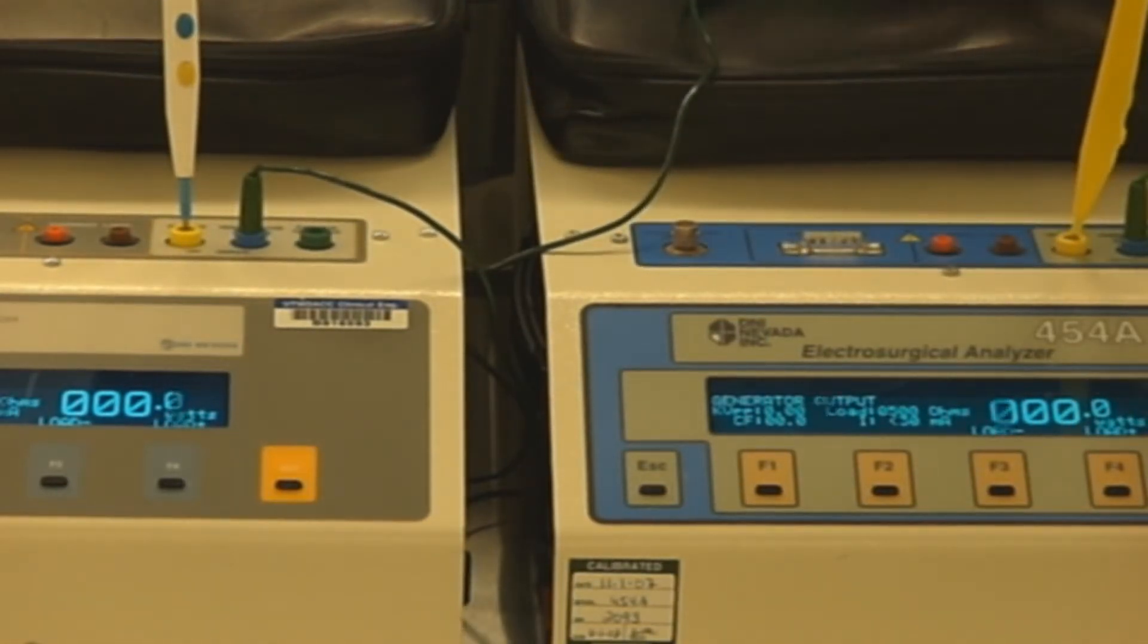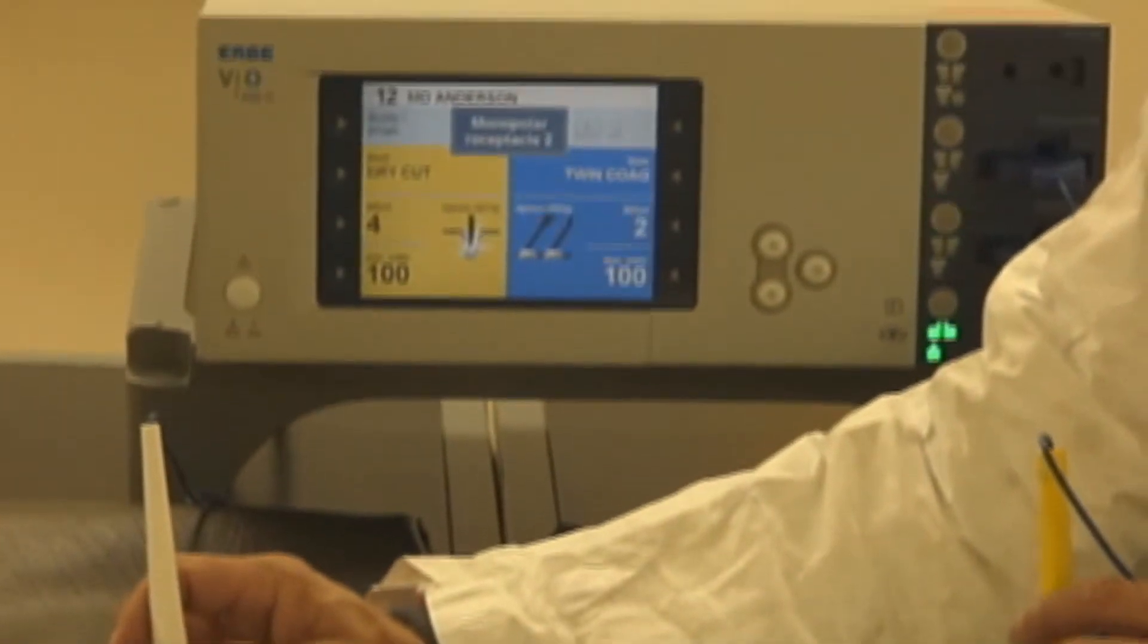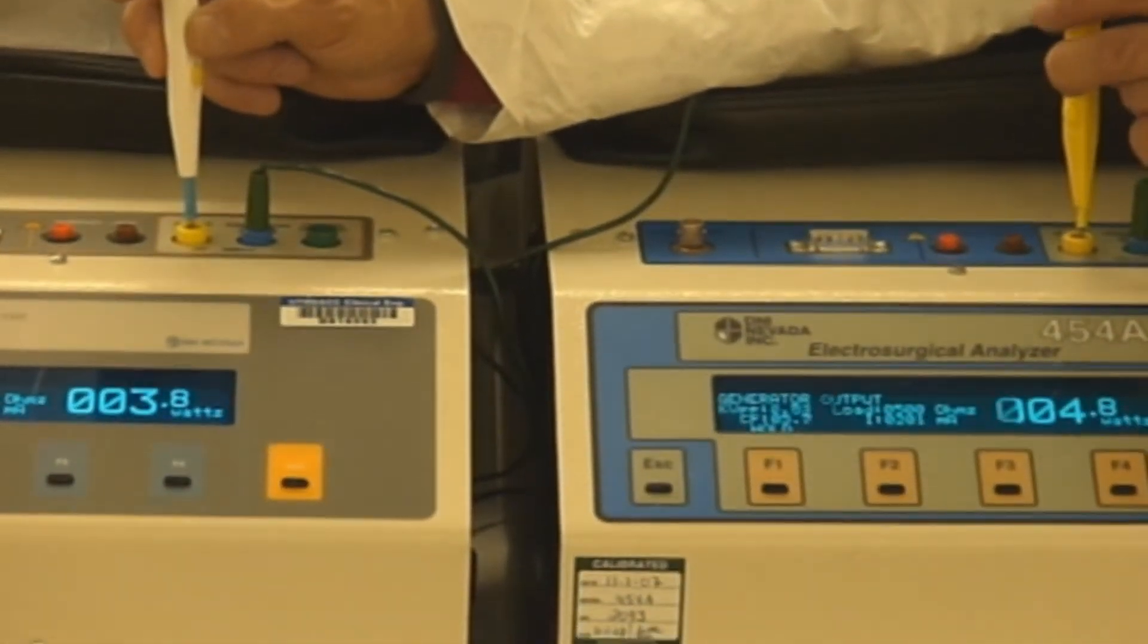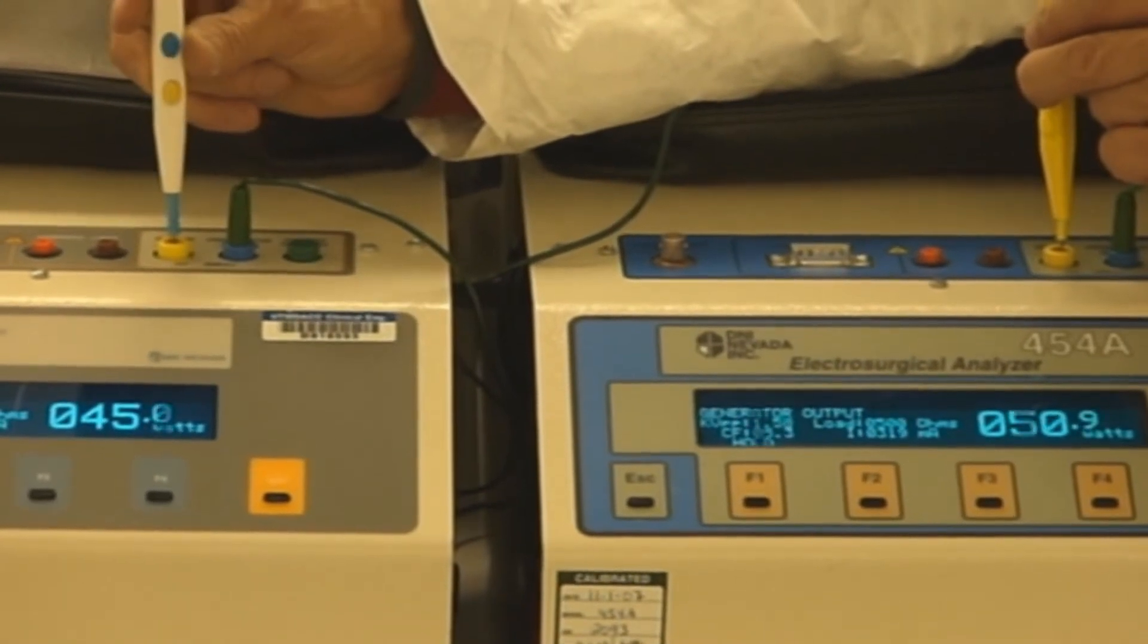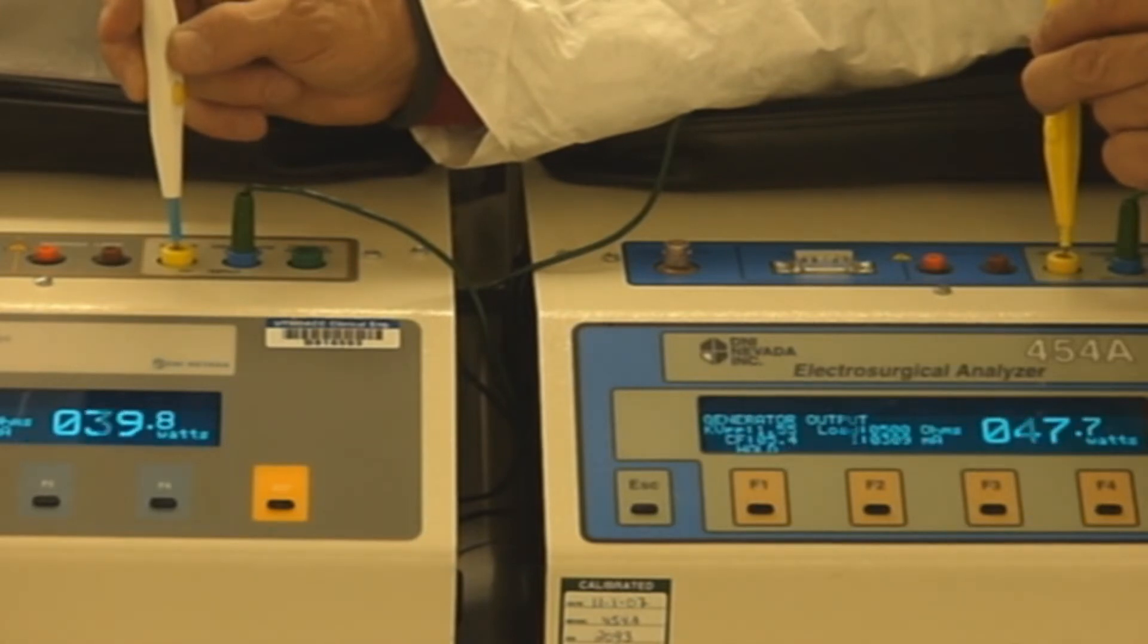Now let's do effect two. We won't even bother with one, should I just use that one? Here we go, effect two, 100 watts, 500 ohms on both units. There it is, there's the split. Now we're going to go ahead and, there's the shift. Surgeon one comes in.